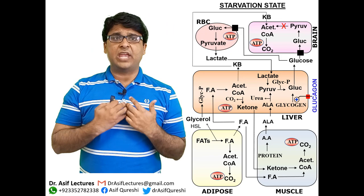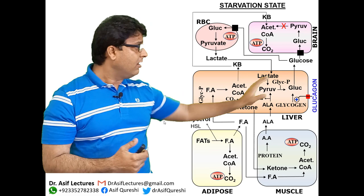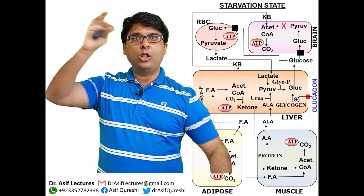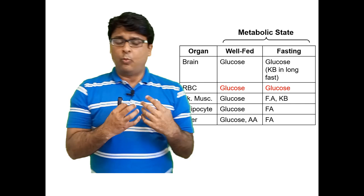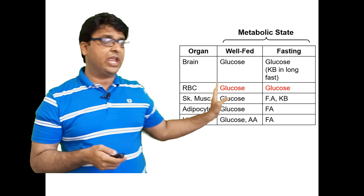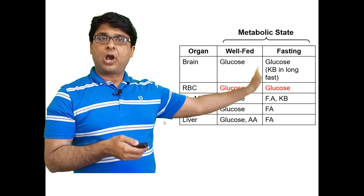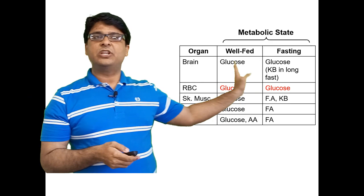That is the overall summary of the starvation phase. Glucagon is the major director. Red blood cells always use glucose exclusively. Adipose tissue and liver use fatty acids; muscles use fatty acids and ketone bodies; the brain switches to ketone bodies during prolonged starvation. All other cell types spare glucose so that red blood cells — which can use nothing else — are always supplied.